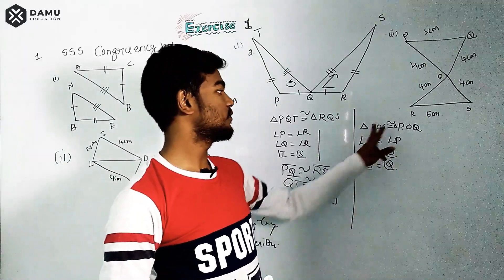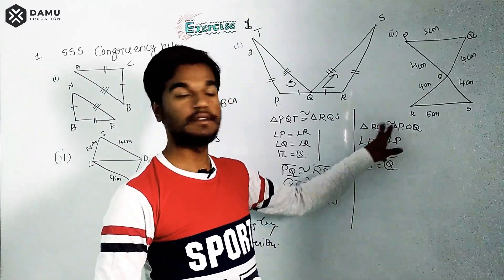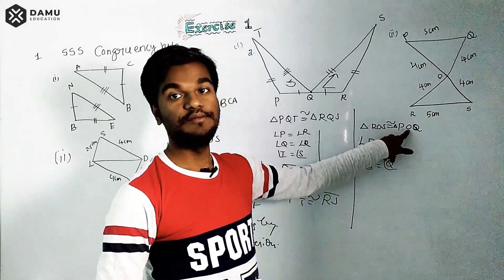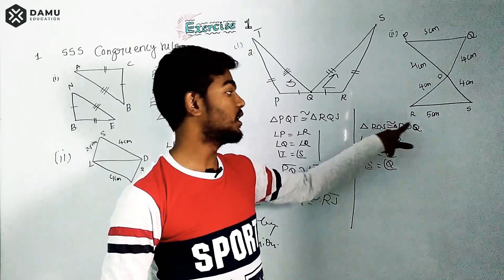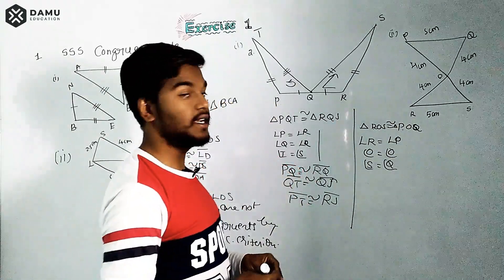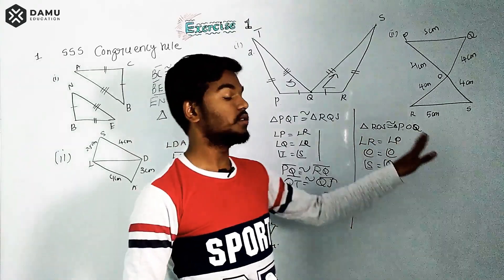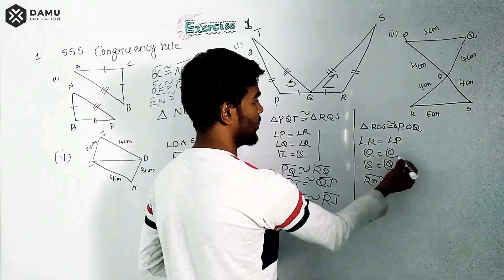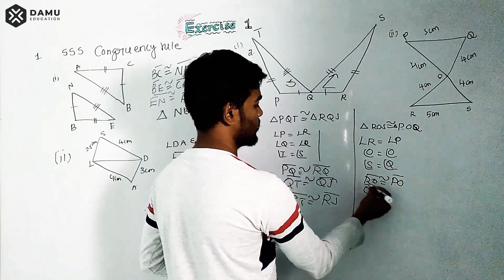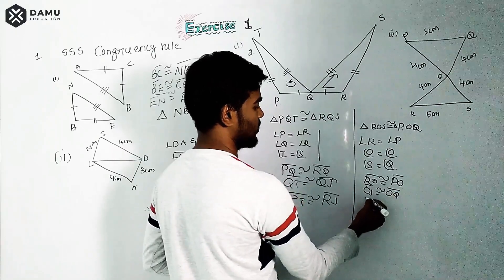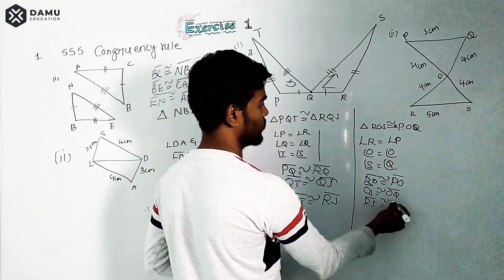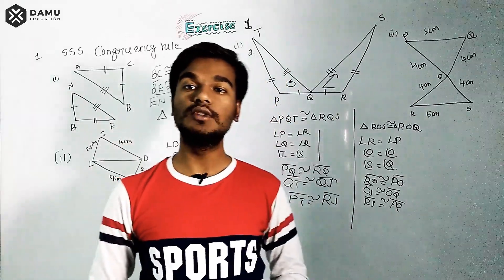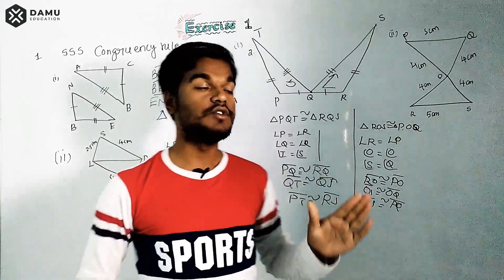Matching first vertex with first vertex, second with second, and third with third between the two triangles. The corresponding sides from triangles ROS and POQ are: RO is congruent to PO, OS is congruent to OQ, and RS is congruent to PQ. Without even looking at the figure, you can write congruency rules and angles if you know the format of the given triangle congruency.